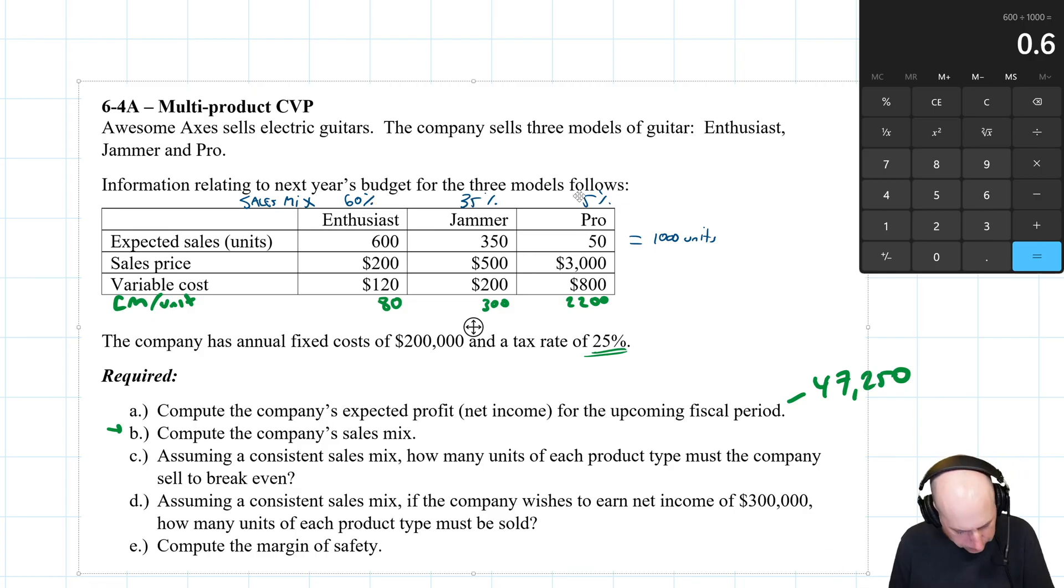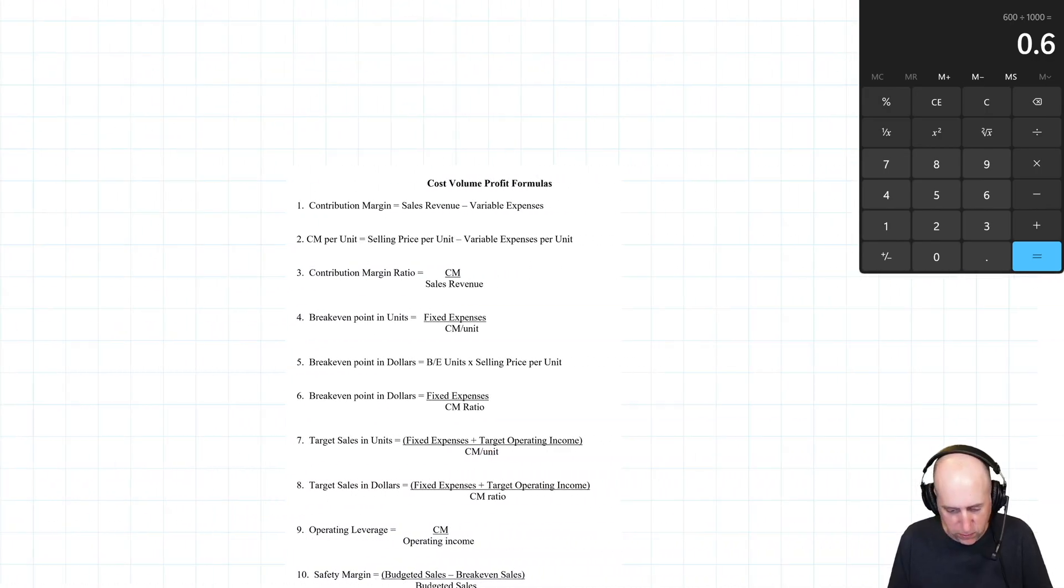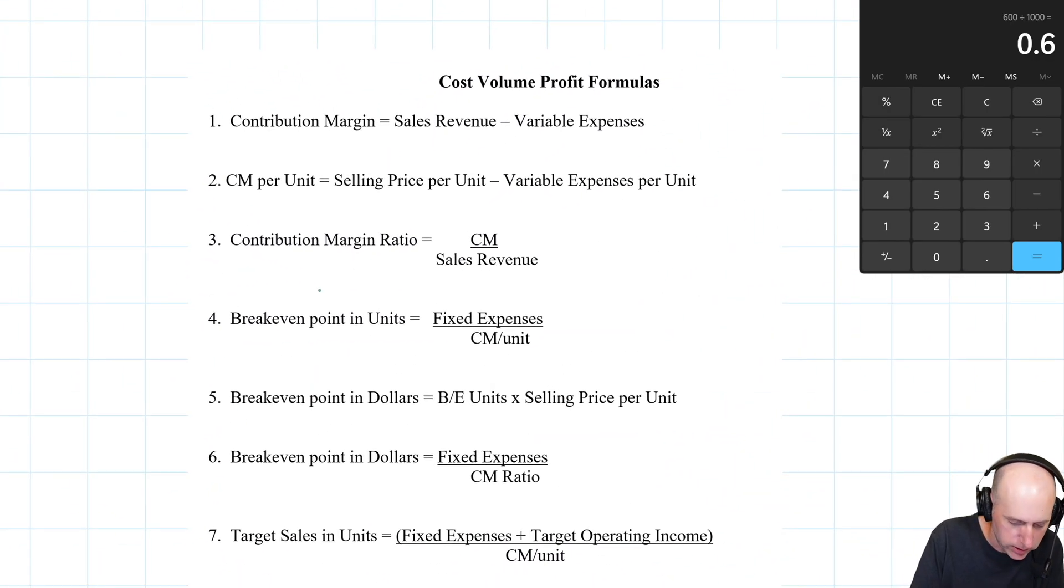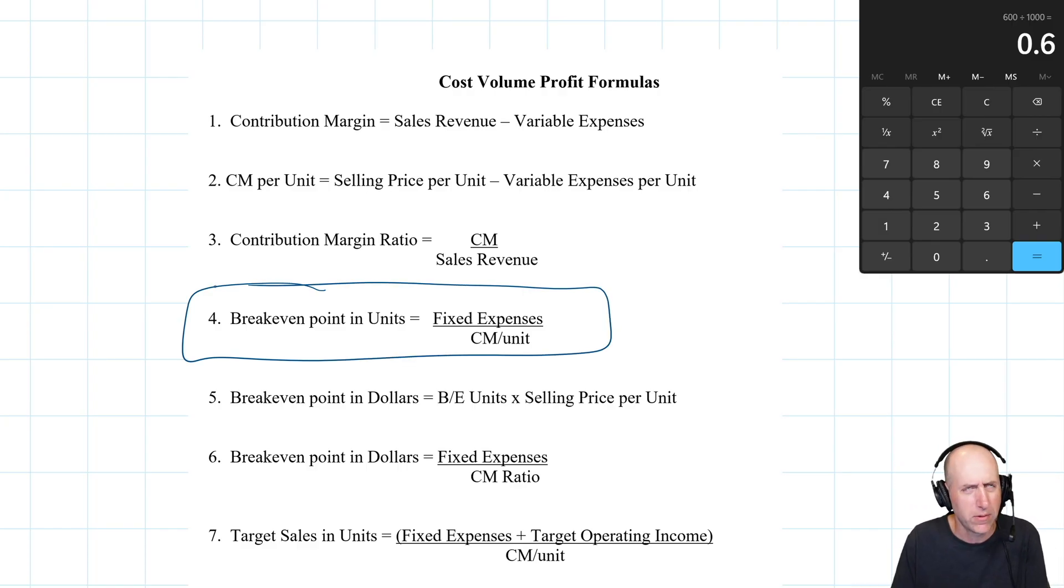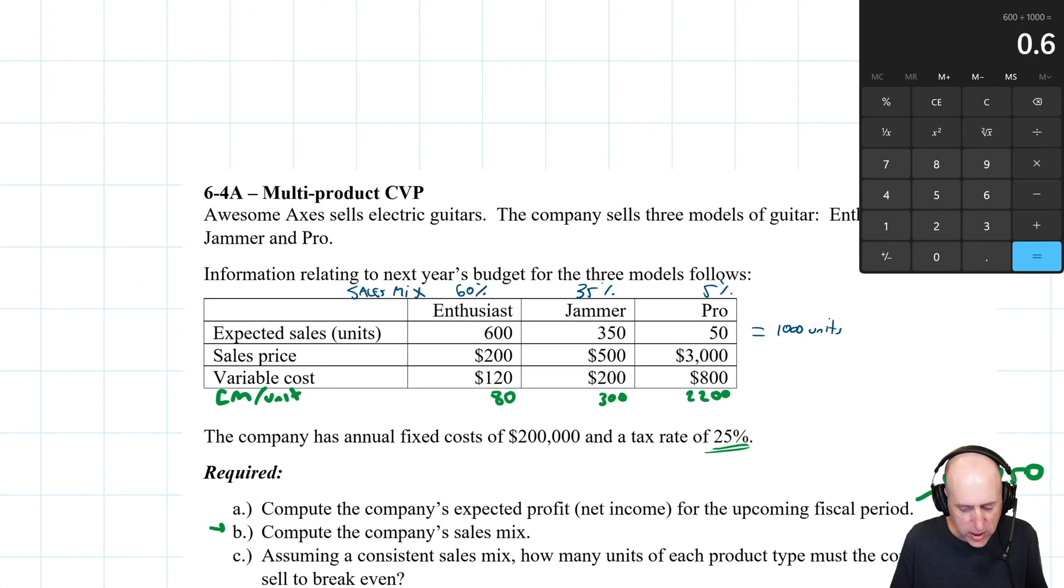Part C: Assuming a consistent sales mix, how many units of each product type must the company sell to break even? This uses the same formula we've been using all chapter with a slight twist. Break-even in units is fixed expenses divided by CM per unit. The issue is we have three different CM per units: 80, 300, and 2200. How do I figure out my overall CM per unit? The answer is I take a weighted average.